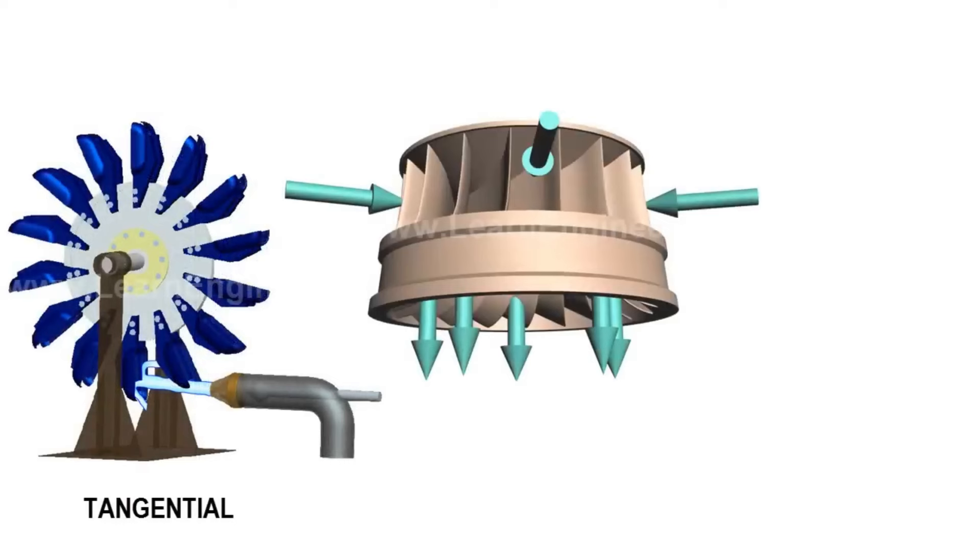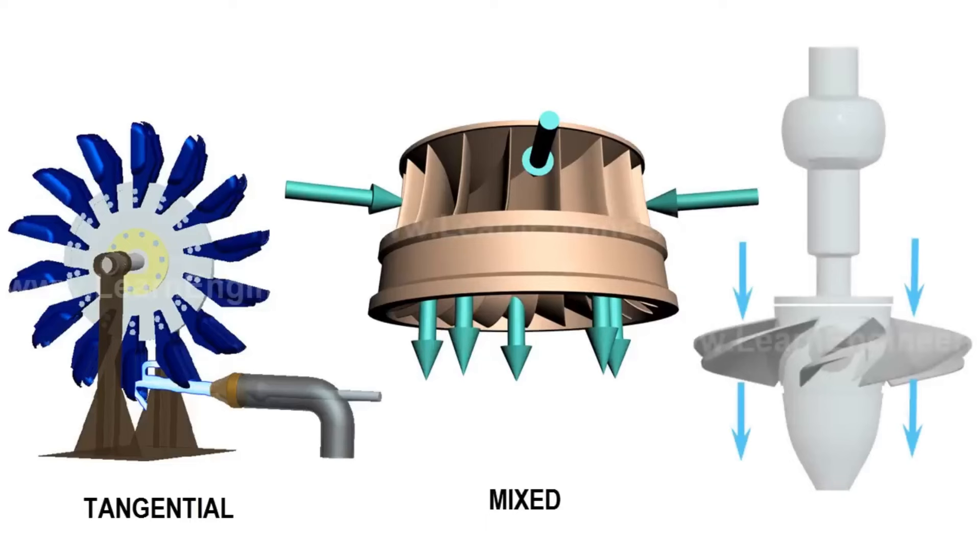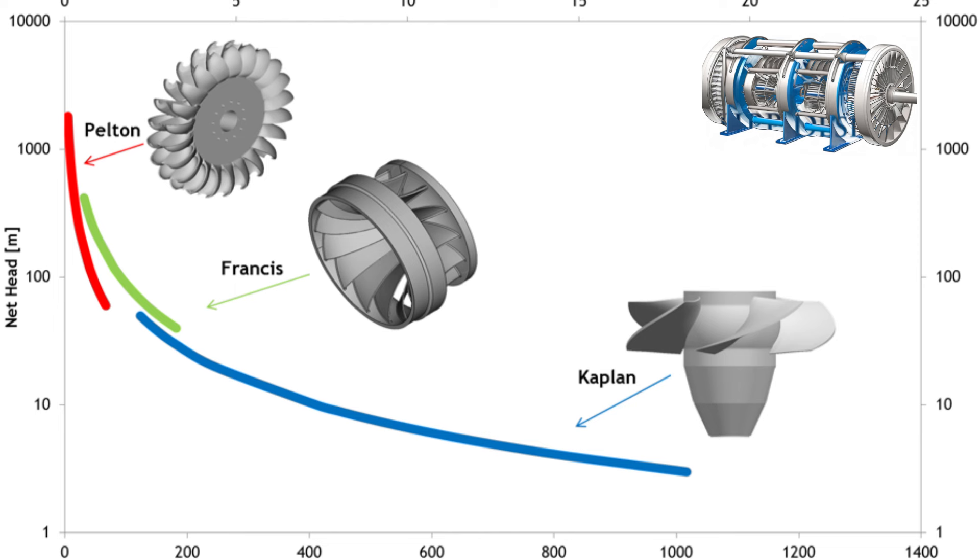In summary, each turbine type presents unique advantages and drawbacks. The Pelton turbine is ideal for high head applications and offers high efficiency across a wide range of flow rates. The Francis turbine, while complex in design, provides efficient operation under a wide range of heads. Lastly, the Kaplan turbine, despite its expensive and complex design, offers unmatched flexibility in low head and varying flow rate scenarios.